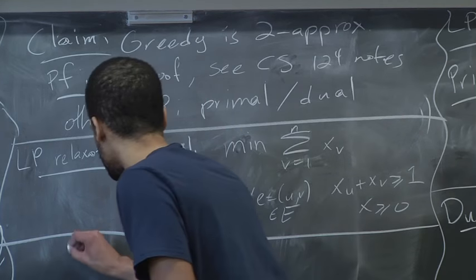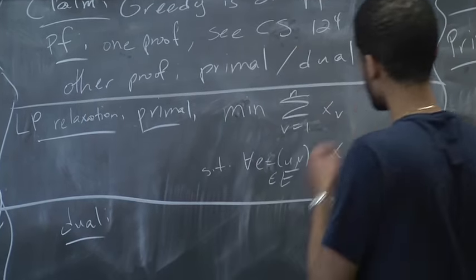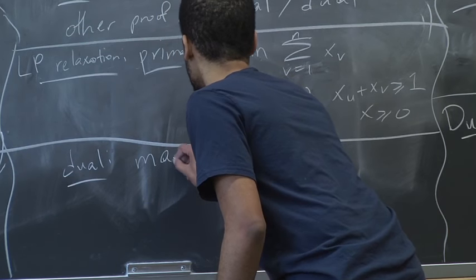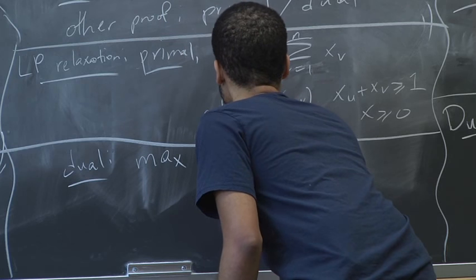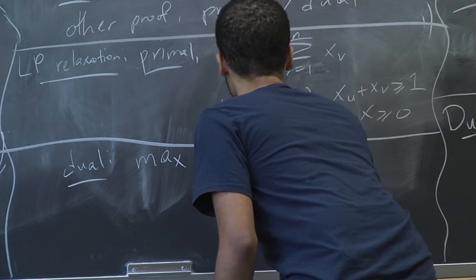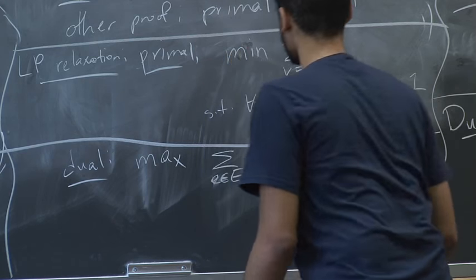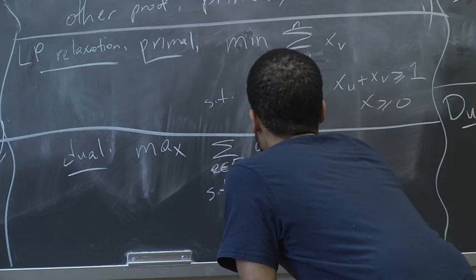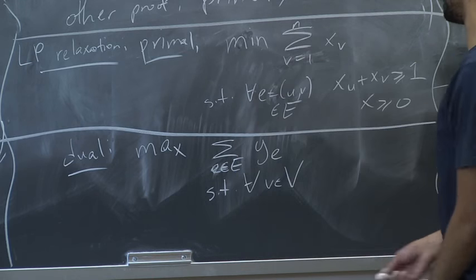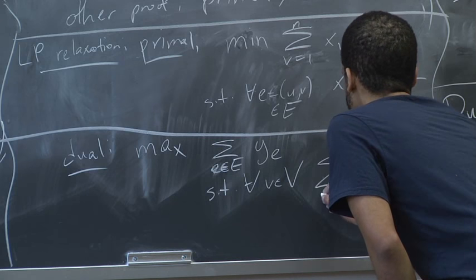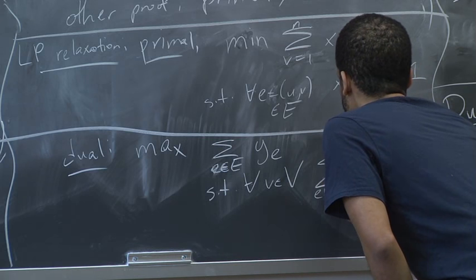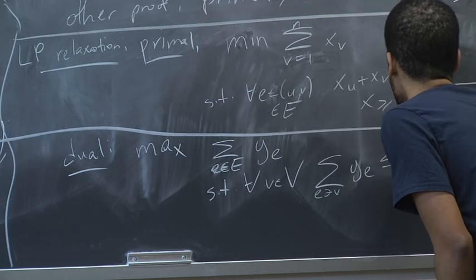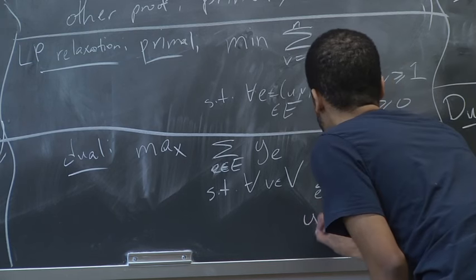Dual: we want to maximize the sum over edges of YE, such that for all vertices V, the sum of YE over edges incident to V should be at most 1, and also Y is entry-wise at least 0.